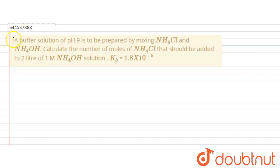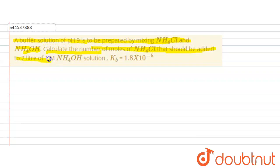Hello everyone. In this question, a buffer solution of pH 9 is to be prepared by mixing NH4Cl and NH4OH. We need to calculate the number of moles of NH4Cl that should be added to 2 liters of 1 molar NH4OH solution. Kb is 1.8 × 10⁻⁵.